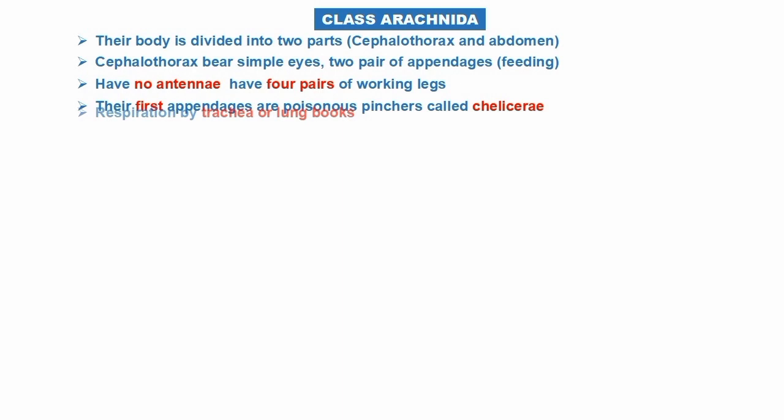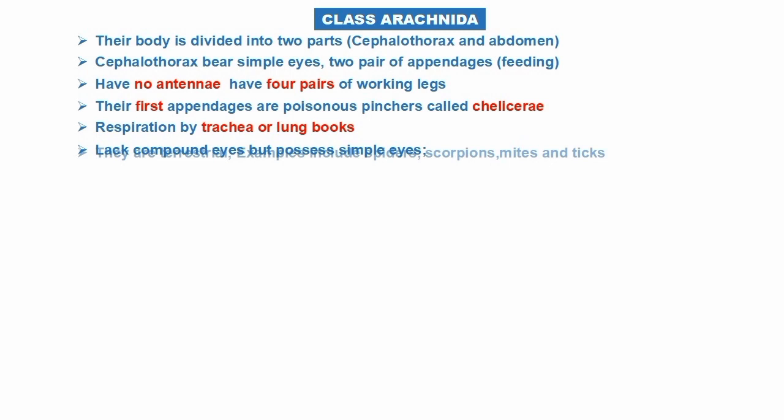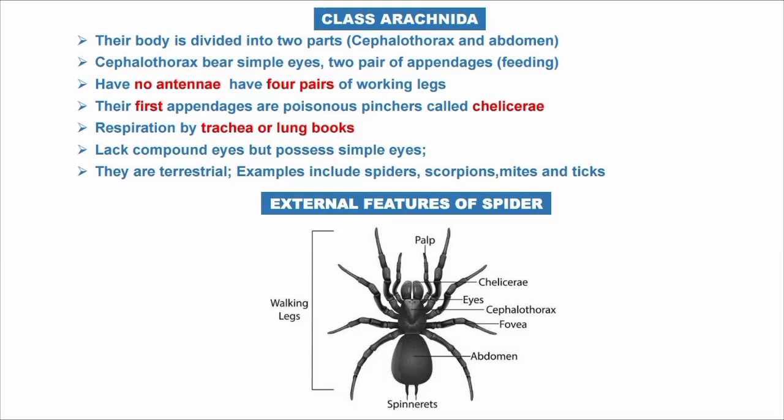Their first appendages are poisonous pinchers called chelicerae. They breathe especially by trachea or book lungs. They lack compound eyes but have some simple eyes. That is Arachnida — they are terrestrial.